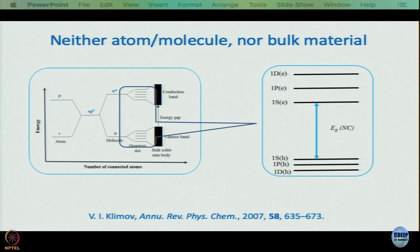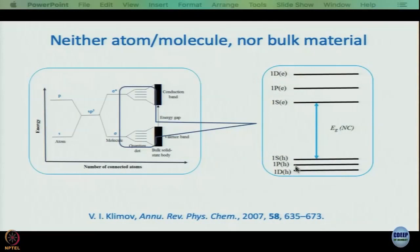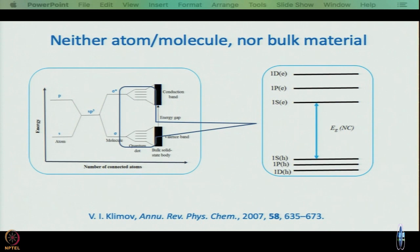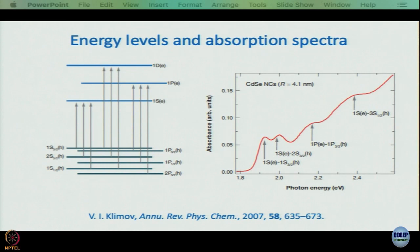We are not going to enter a very detailed discussion of that because semiconductor nanocrystals could be half a course by itself. We are approaching the end of this course, so let us take it axiomatically: in the conduction band, we have 1s, 1p, 1d in increasing order of electron energy; in the valence band, 1s, 1p, 1d in decreasing order. A hole occupying a lower energy level actually means greater energy, because that is where the energy started from.